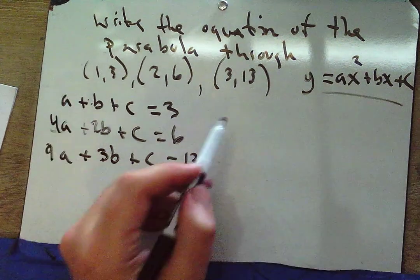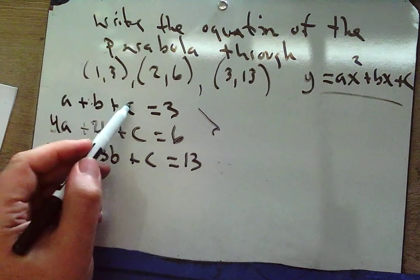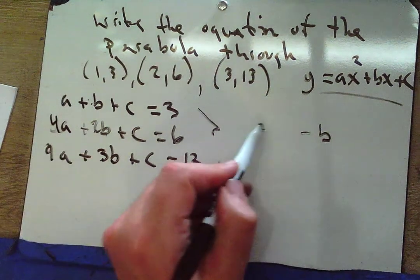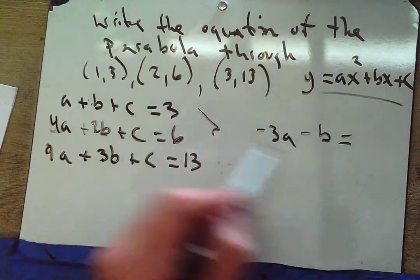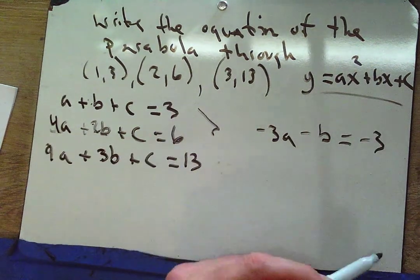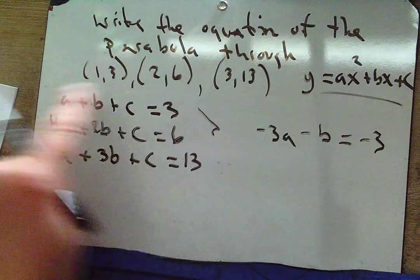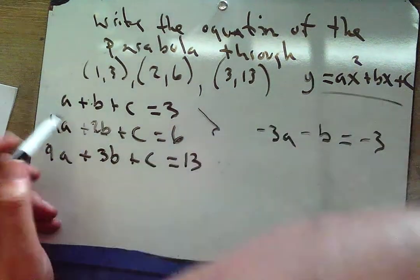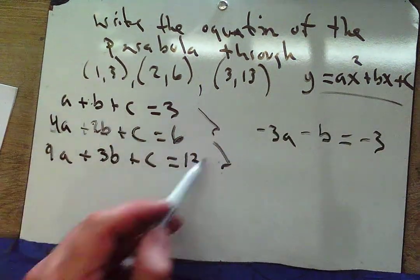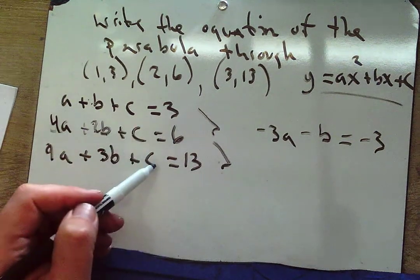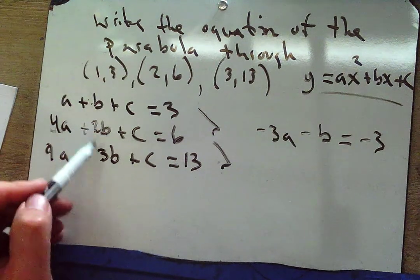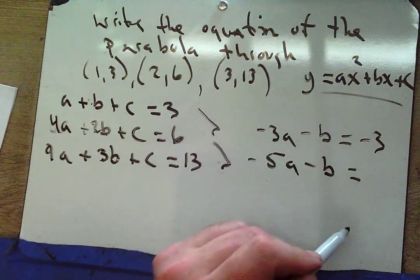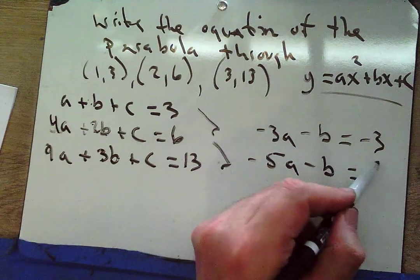Taking equations one and two and subtracting to eliminate c: b minus 2b is negative b, a minus 4a is negative 3a, and 3 minus 6 equals negative 3. So negative 3a minus b equals negative 3.